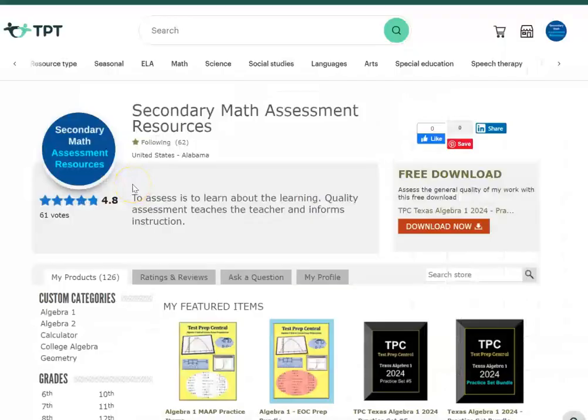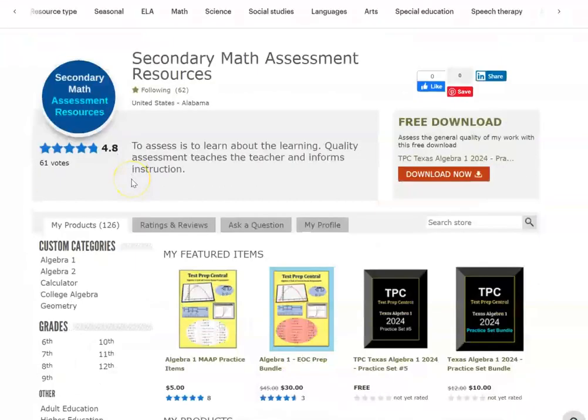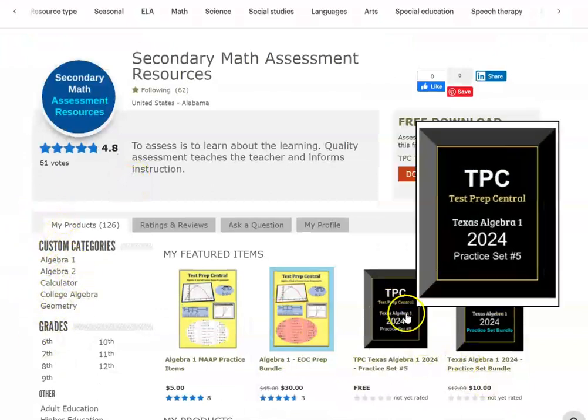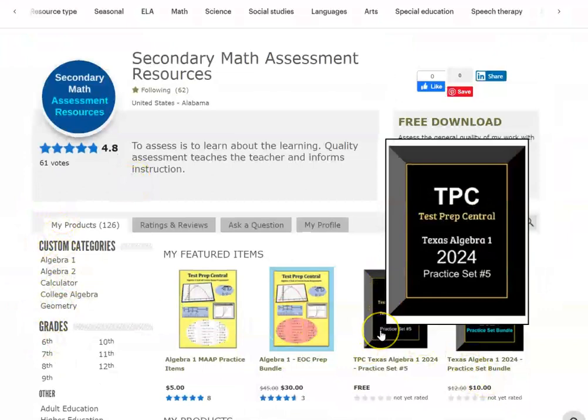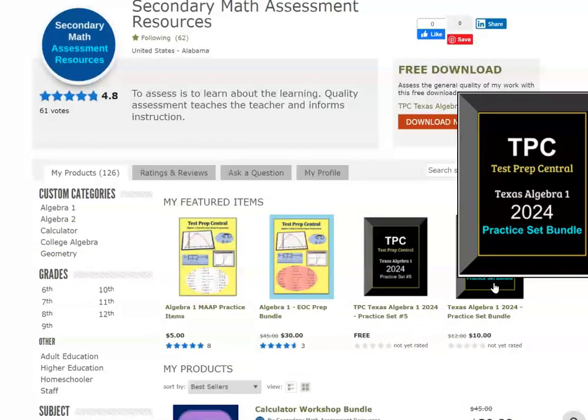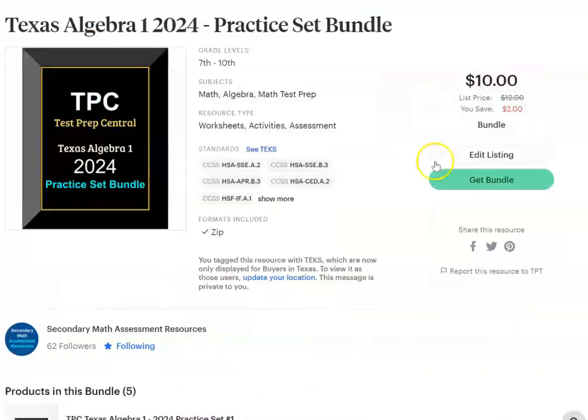If you haven't already done it, head over to Secondary Math Assessment Resources on Teacher Pay Teacher to get your free copy of your practice set 5 and you'll find that right here on the front page. It is a featured item. I now have the practice set bundle available and in the bundle you get all 5 of the practice sets that are in this series Test Prep Central Texas Algebra 1 2024. Each of the sets has or each practice set has 5 items that are aligned to the TEKS and an accompanying video to show you how to work those items using the Texas version of the Desmos graphing calculator.